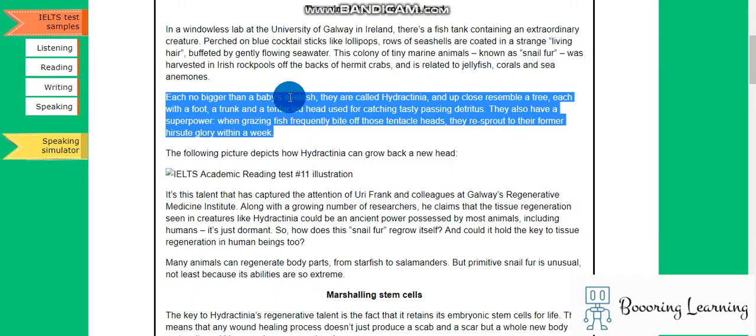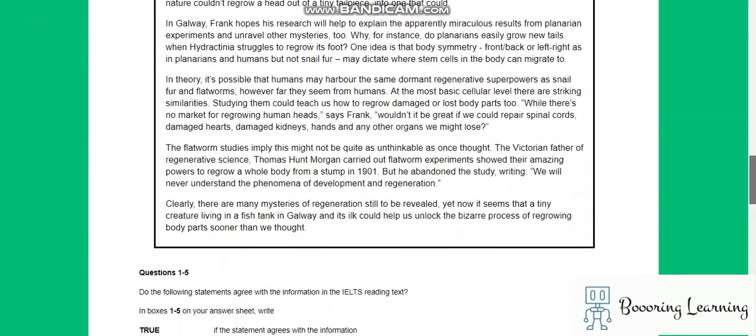Each no bigger than a baby eyelash, they're called hydroctinia and up close resemble a tree, each with a fruit, a trunk, and a tentacled head used for catching. They also have a superpower. Fish frequently bite off those tentacle heads, but they regrow within a week. Okay, the following picture depicts... we can't see the following picture. It's a problem.